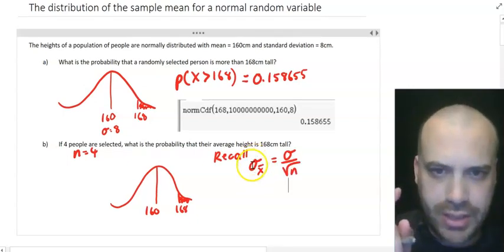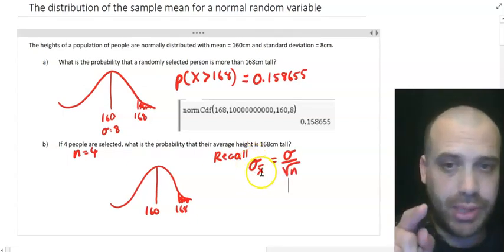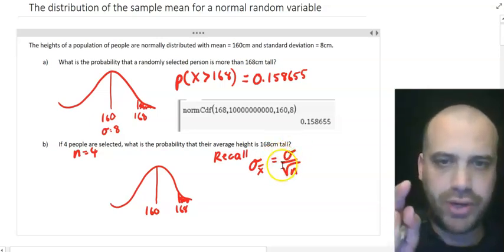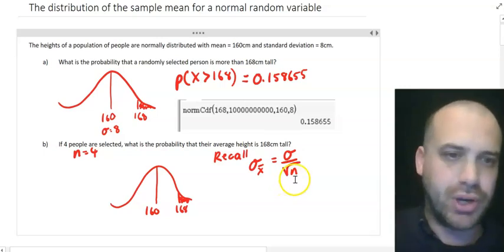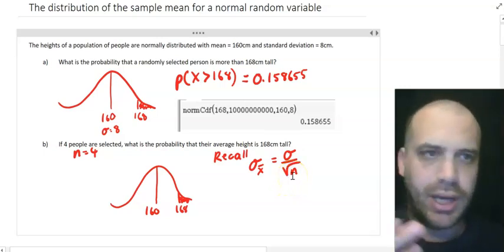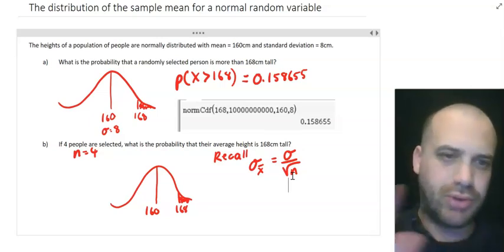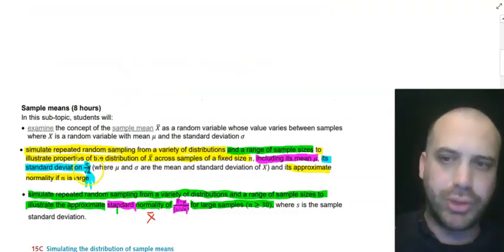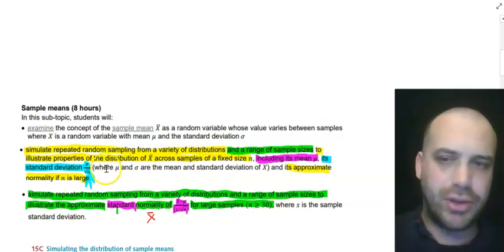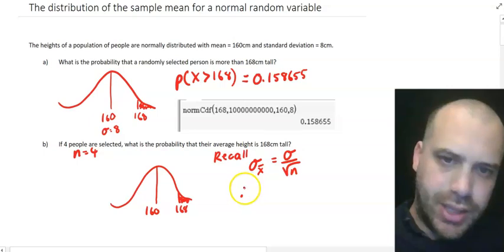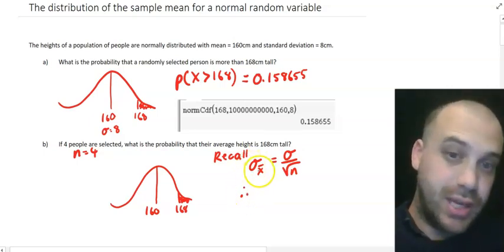So the standard deviation of the sample mean is equal to the standard deviation of the population over the square root of the sample size. In this case, four. Now, this is direct from your syllabus. It's also direct from your formula sheet. You might recall this from the last video that I made about this stuff. So I'm not telling you lies. So let's find our standard deviation of the sample mean.